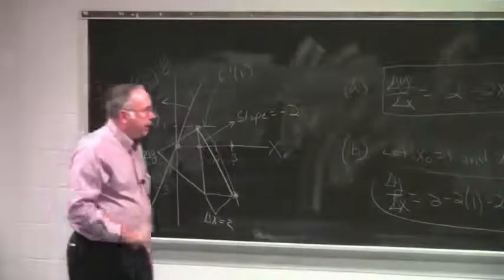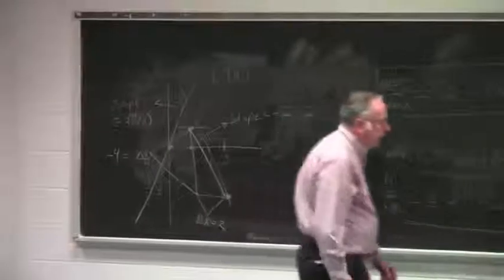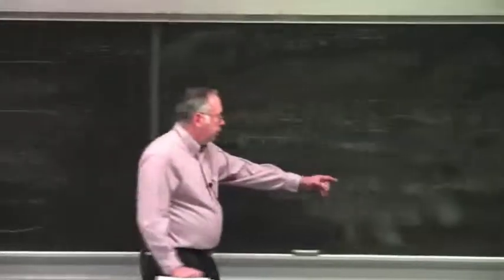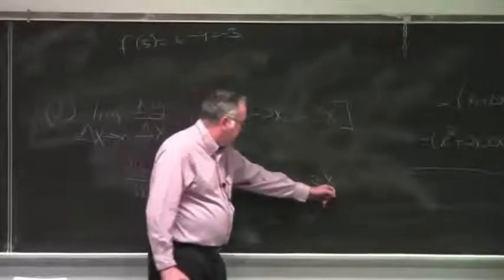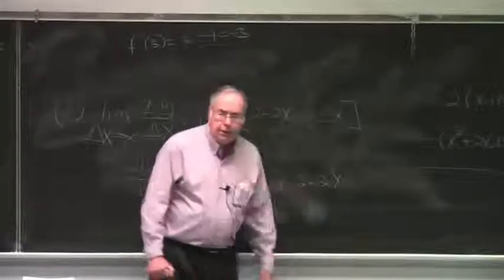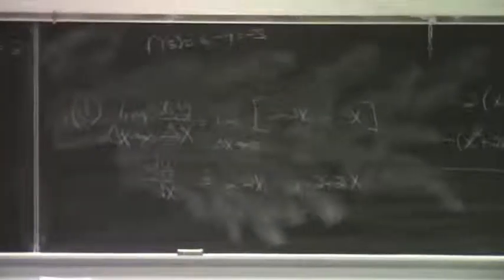Now, f prime of zero is what? Two. If x equals zero, the derivative is two. So the slope of this line is equal to two.